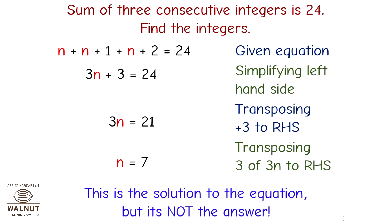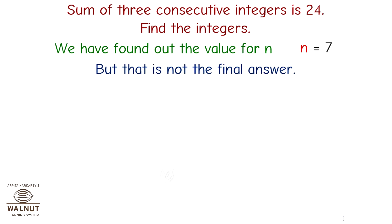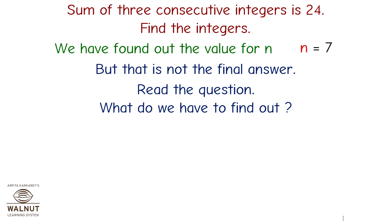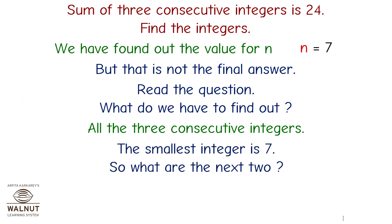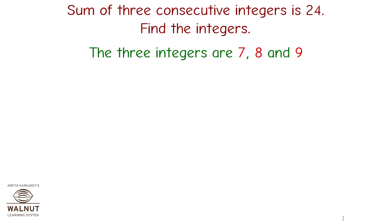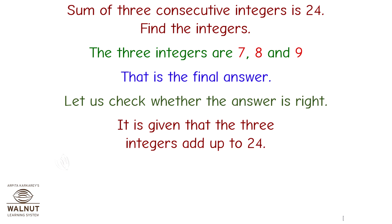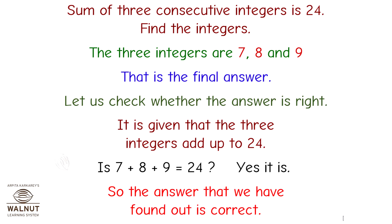Therefore n equals 7. This is the solution to the equation, but it is not the final answer. We need to find all three consecutive integers. The smallest integer is 7, so the next two are 8 and 9. The three integers are 7, 8, and 9. Let us check: 7 plus 8 plus 9 equals 24. Yes, so the answer is correct.